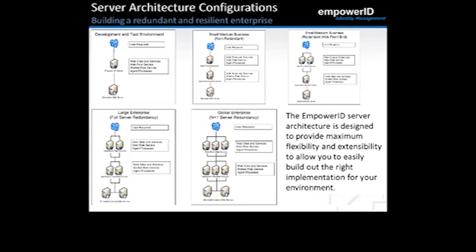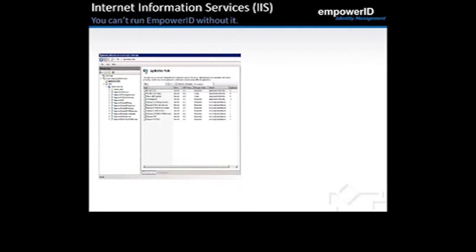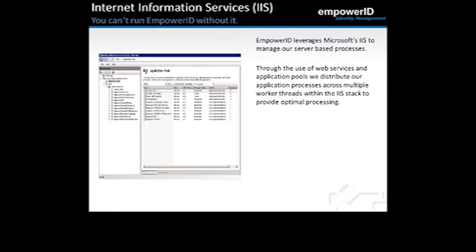As you can see, the Empower ID server architecture is designed to provide maximum flexibility and extensibility to allow you to easily build out the right implementation for your environment. Internet Information Services — you can't run Empower ID without it. With our architecture, we leverage Microsoft's IIS to manage our server-based processes. Anything that happens with Empower ID is passed off to the IIS stack for processing. Through the use of web services and application pools, we distribute application processes across multiple worker threads within the IIS stack.